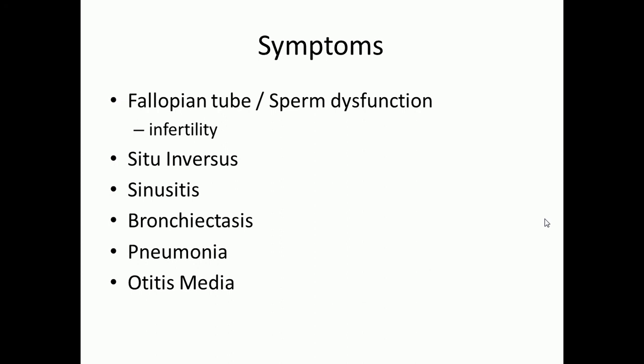Finally, you also get recurrent otitis media — ear infections. To summarize Kartagener syndrome: you'll see immotile cilia, infertility, bronchiectasis, recurrent sinusitis, and most notably — situs inversus, which is the key finding to recognize on an exam.